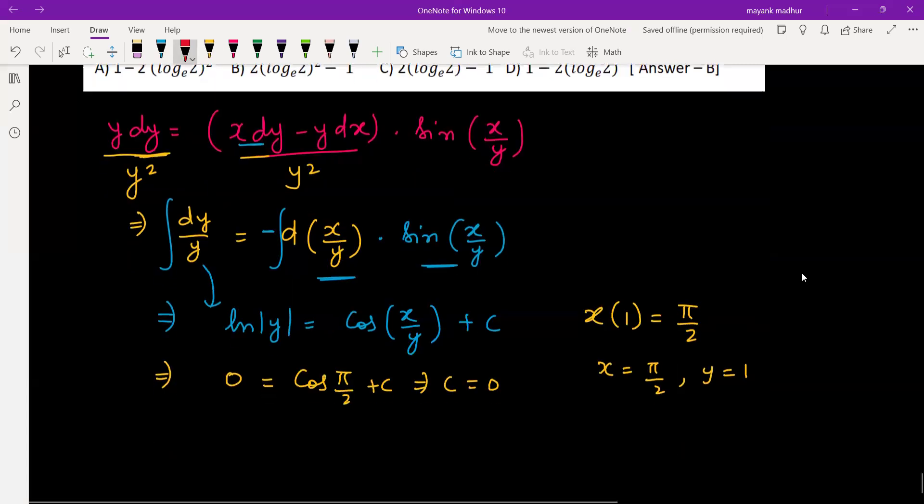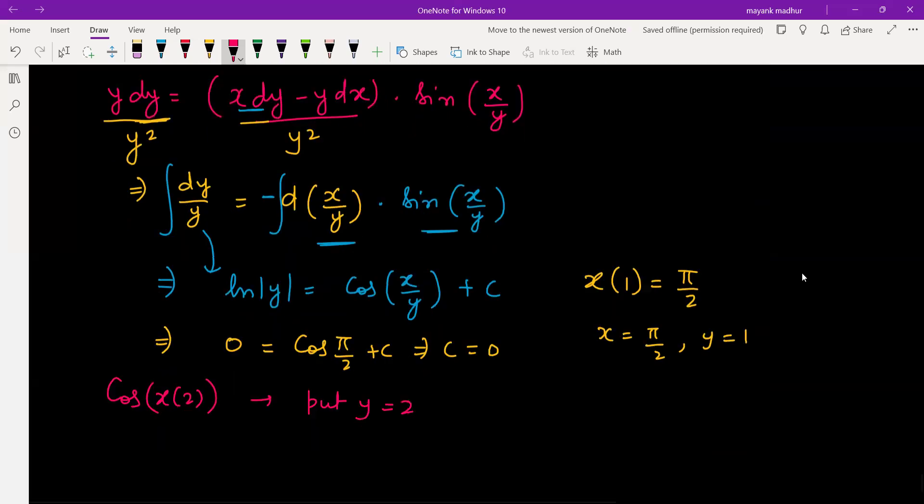You're looking for cos(x(2)). Cos of x(2) means we need the input y value to be 2. Put y equal to 2 and you'll get the value of x. Putting y equal to 2, this will be ln(2), this will be cos of x whose input is 2 divided by 2.